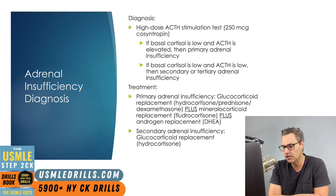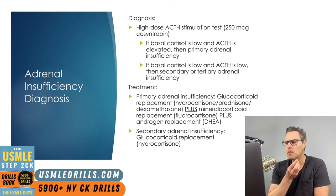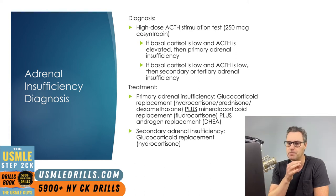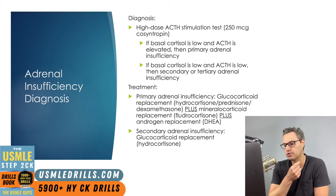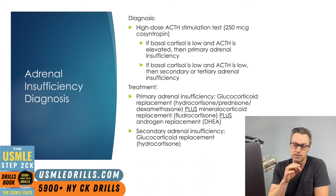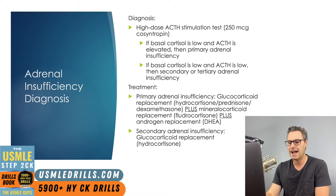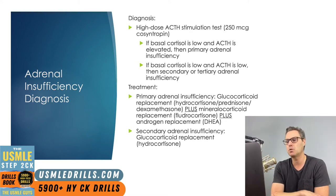Treatment of primary adrenal insufficiency includes glucocorticoid replacement — usually hydrocortisone — plus mineralocorticoid replacement with fludrocortisone, as well as androgen replacement with DHEA. Secondary adrenal insufficiency is treated with glucocorticoid replacement using hydrocortisone. Patients should always be instructed to increase glucocorticoid doses by two to three times during febrile illness until the illness passes.